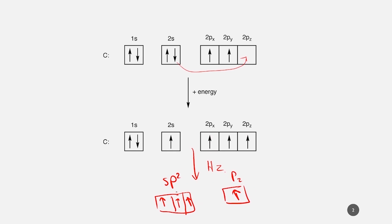Those three electrons in the sp2 hybridized orbital can form a sigma bond, and this one electron can form what we call the pi bond.